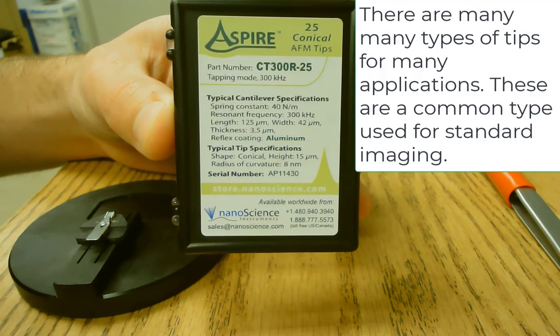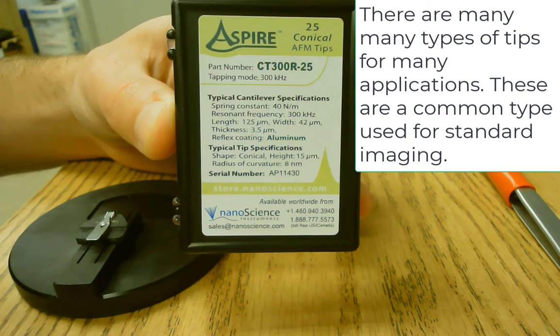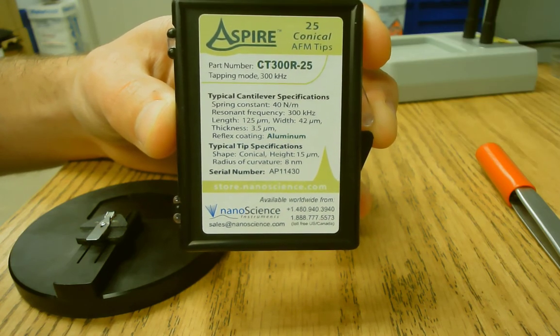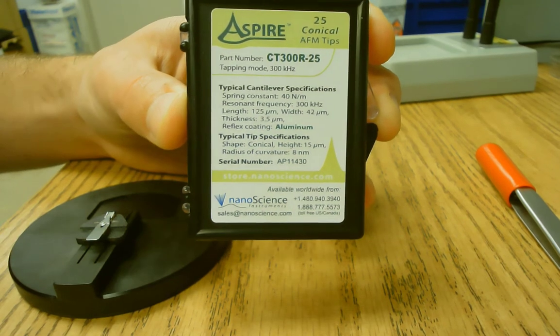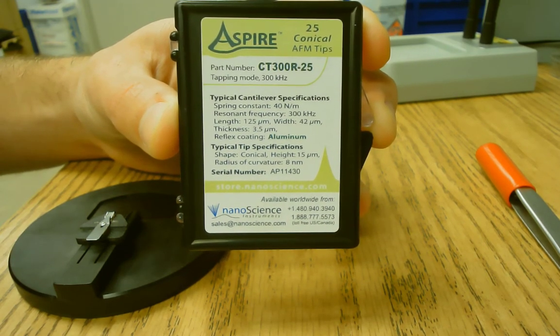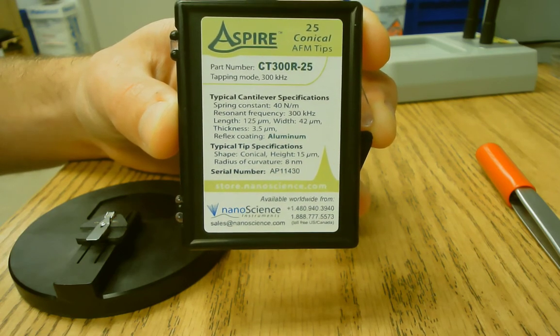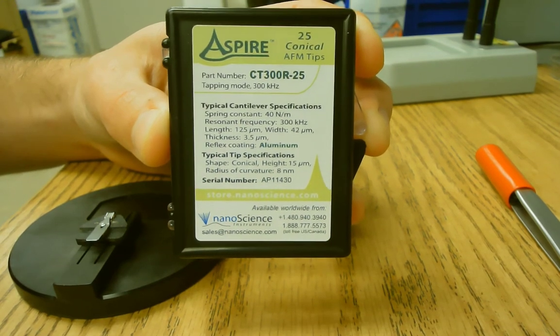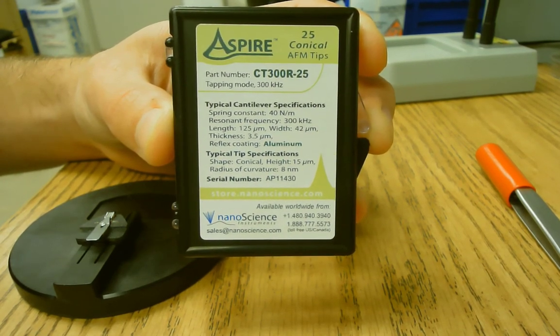So the specifications are listed here. You can see there's a lot that goes into these tips. They even measure the spring force constant. They have the approximate resonant frequency listed. The length and width of the cantilever as well as thickness. The reflex coating.